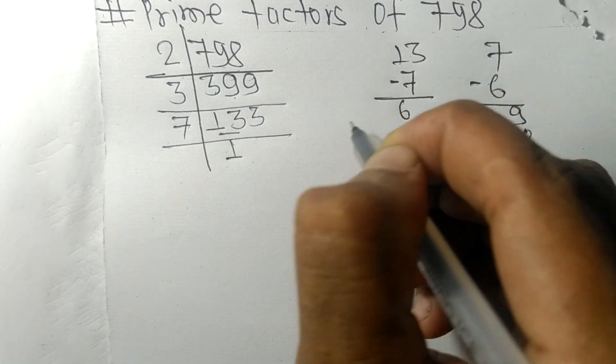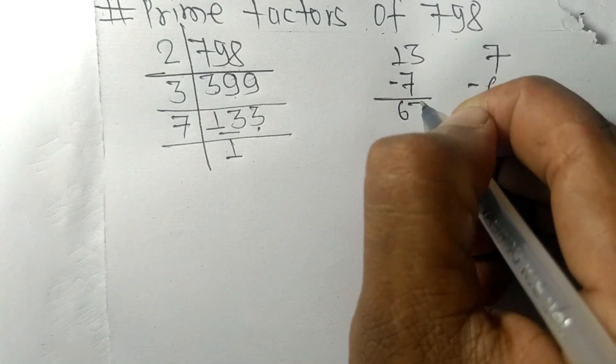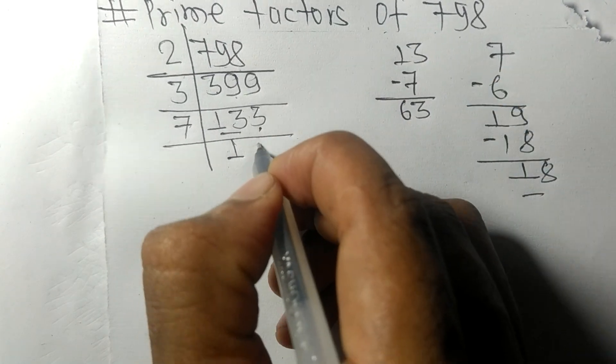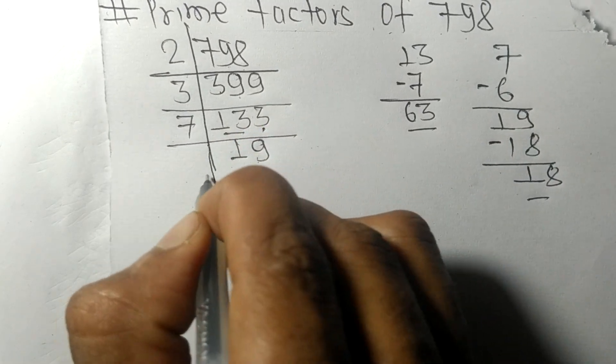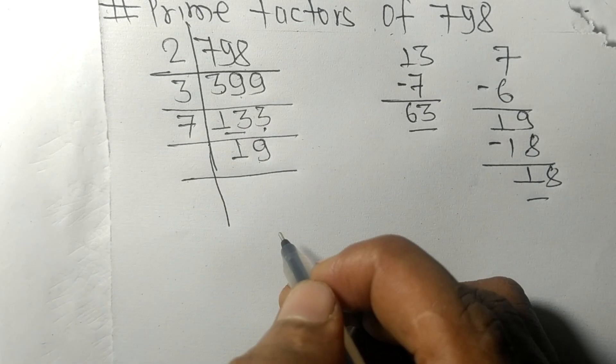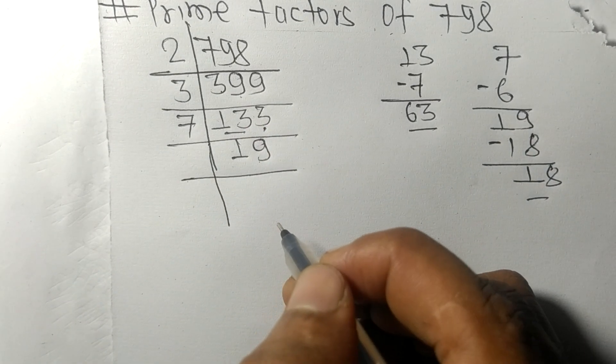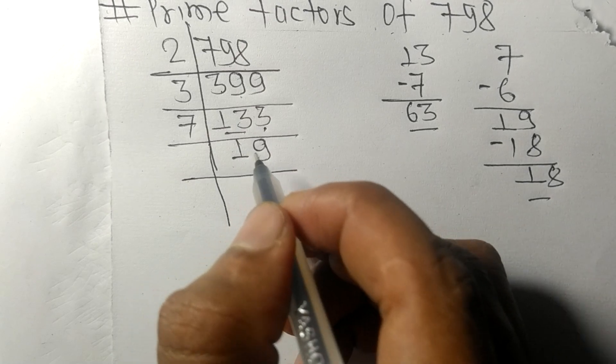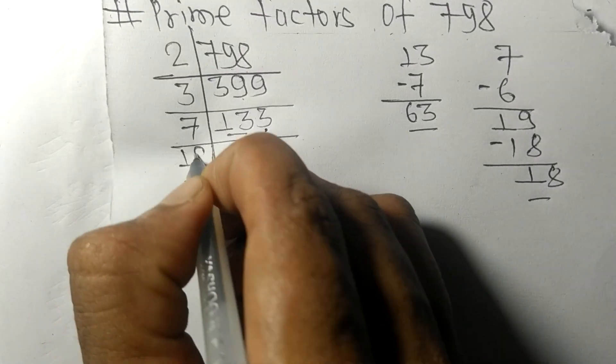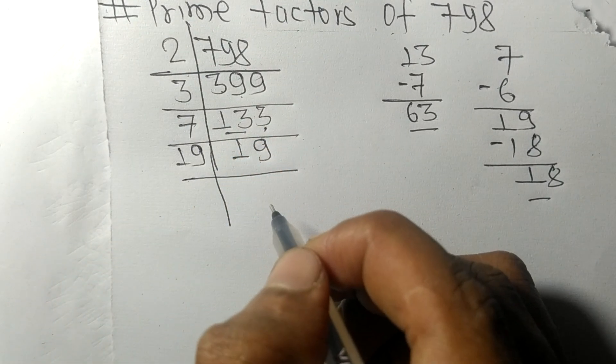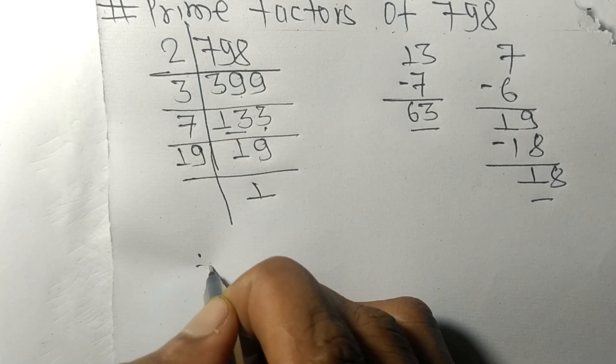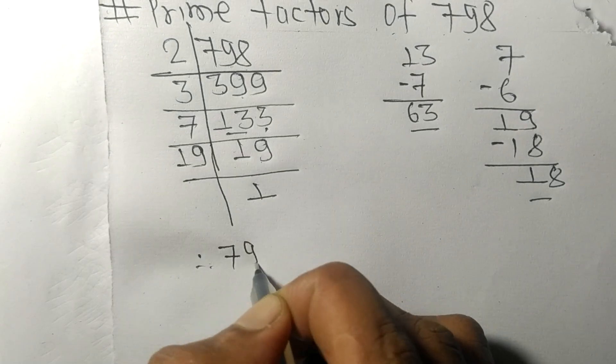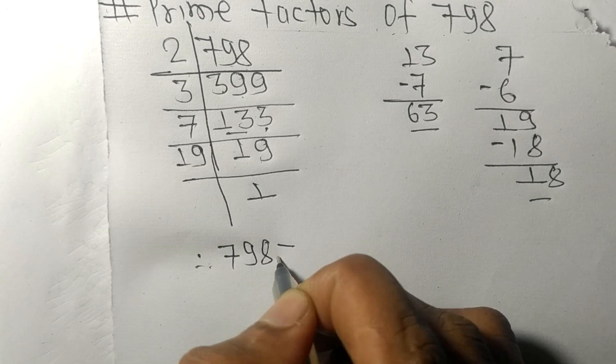prime number, so it is exactly divisible by 19 only. On dividing we get 1. Therefore, 798 is equal to 2 times 3 times 7 times 19.